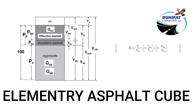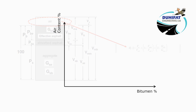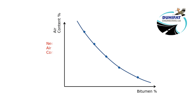We then calculate the air content for each mixture using equations taken from the elementary cube. We can draw a graph, and by entering the required air content, we can find the required bitumen content.